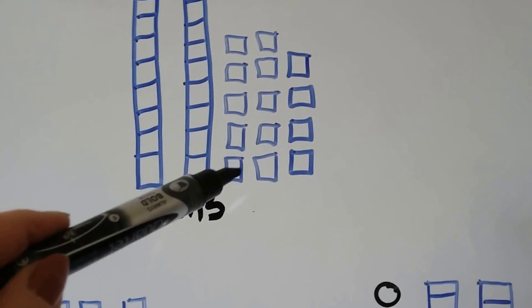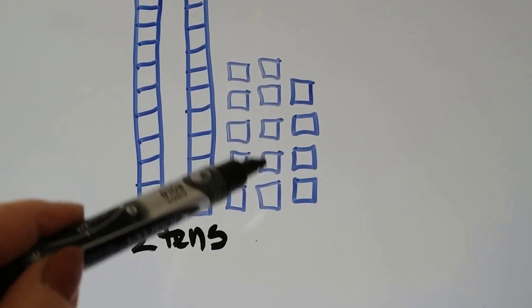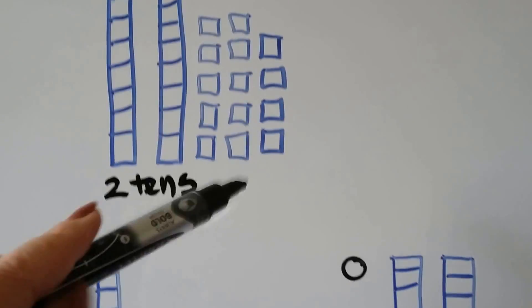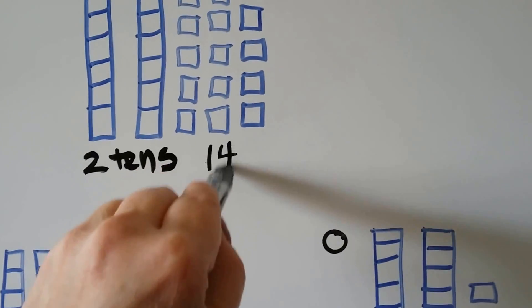And how many ones do we have? 1, 2, 3, 4, 5, 6, 7, 8, 9, 10, 11, 12, 13, 14. There's 14 ones.